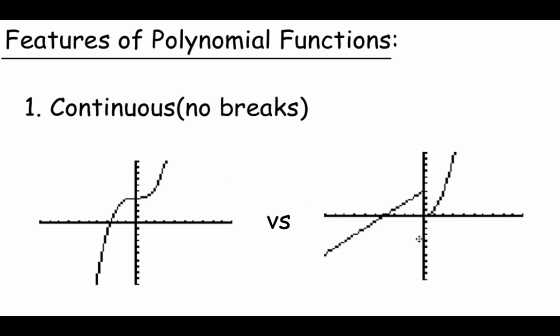As far as this other graph goes, it looks like there's a linear piece and even a quadratic piece. If we were graphing this one out, we'd draw this first line, then we'd have to pick up our pencil and move it to draw the other piece, meaning there is a break in the graph. So this one would not be continuous.